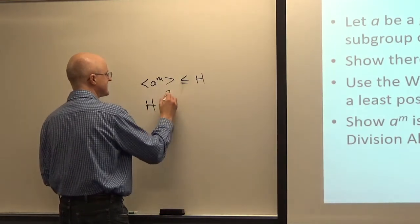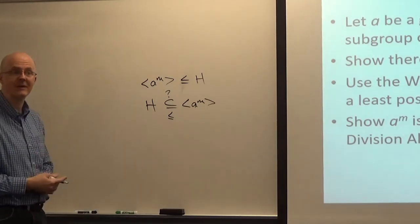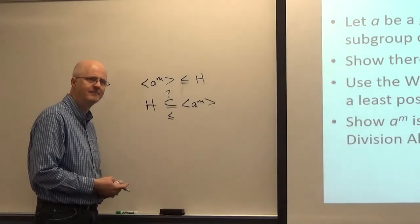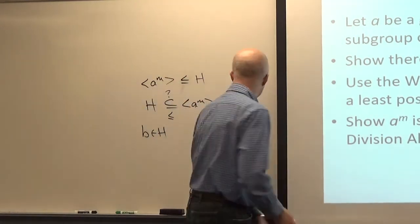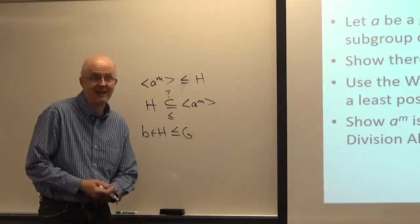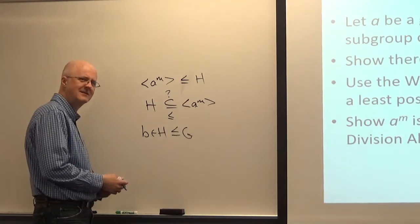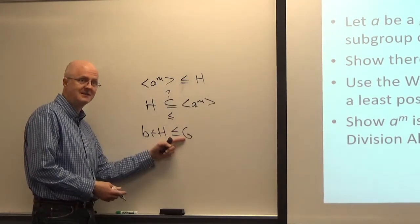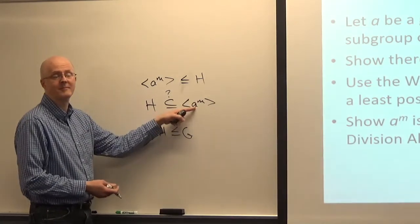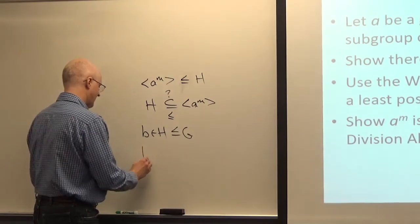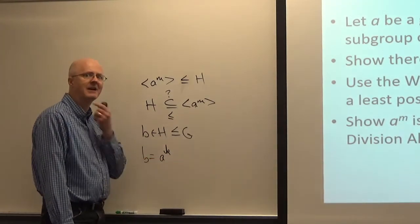To show the other inclusion, take an arbitrary element B in H. B is in H, which is a subgroup of G, so B is definitely a power of A—say B = A^k. The question is whether it's a power of A^m. Apply the division algorithm: divide k by m to write k = Qm + r.